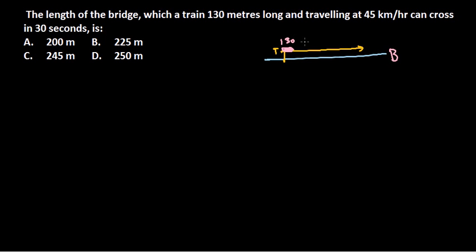They provide the length of the train, which is 130 meters, and the speed of the train, which is 45 kilometers per hour. A bridge can be shorter or larger than the train length, but from the options given, the bridge is longer than the train, so I draw it larger — that's the basic concept.